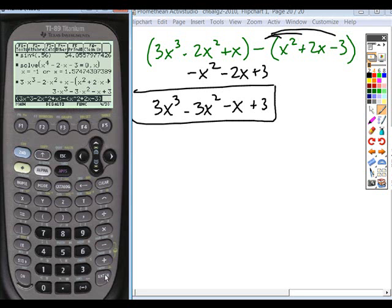If for some reason the answer they gave you was written as factor, so it had multiplication in it, you'd need to use the expand function in the F2 tab, the algebra tab. But that's something that's relatively easy to do as well. All right, any questions on adding subtracting?